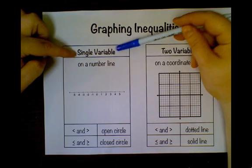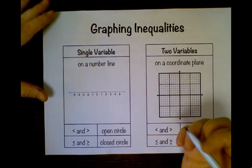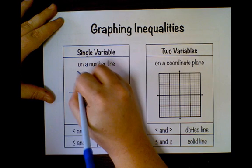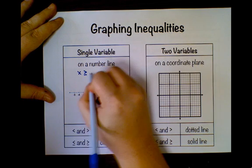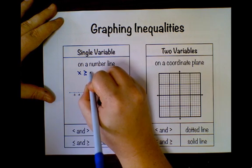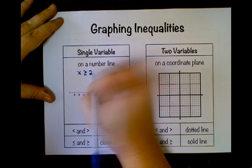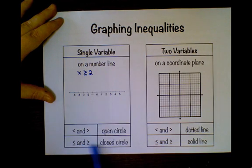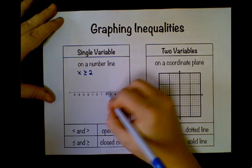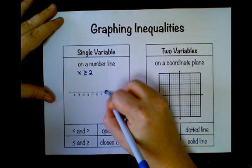Single variable inequalities get graphed on a number line. So for example, if I have x is greater than or equal to 2, I'm going to use a closed circle, which means I draw a circle on 2 and I color it in.